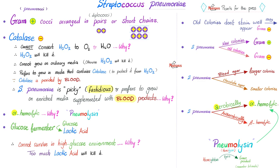Streptococcus pneumoniae is a glucose fermenter. It ferments glucose into lactic acid. That's why it cannot survive in high-glucose environments. Too much glucose equals too much lactic acid production, and lactic acid is an acid — it's going to kill the bacteria.